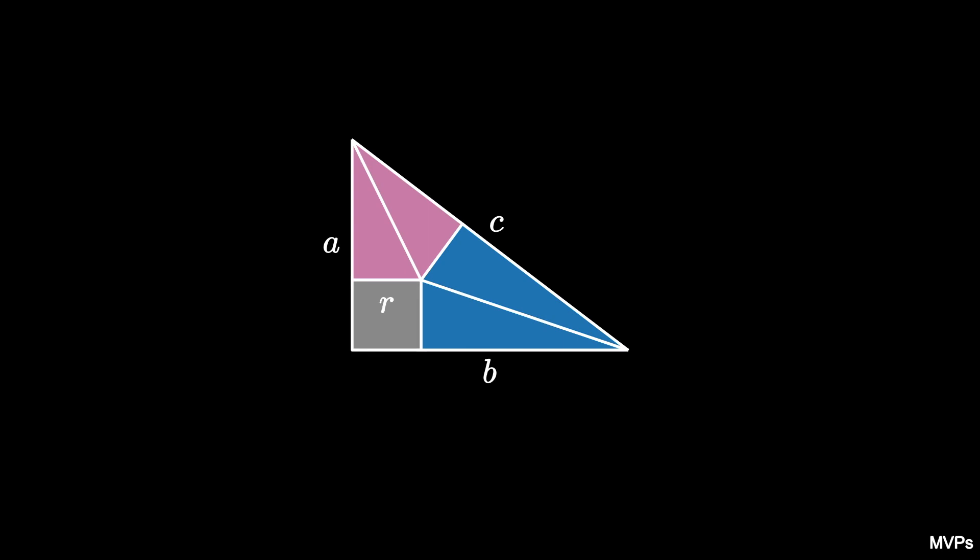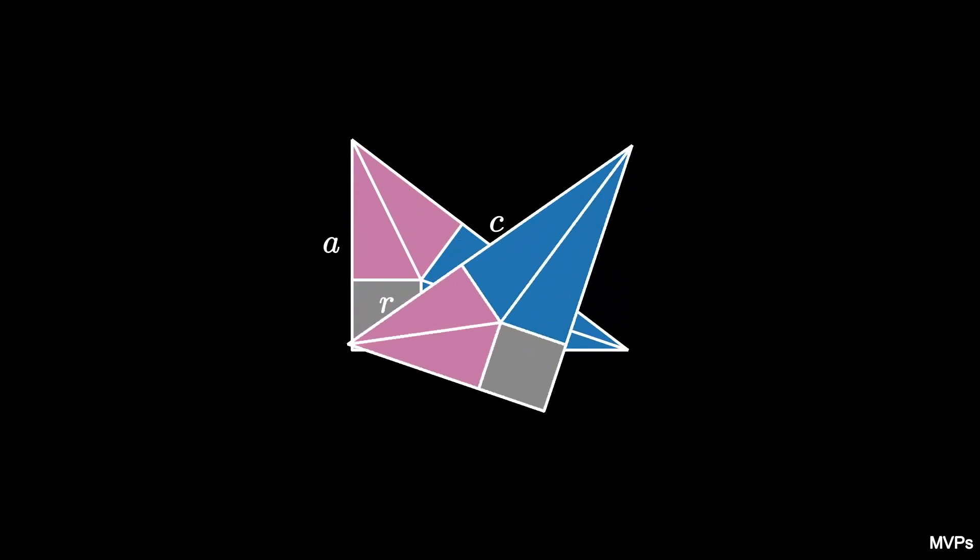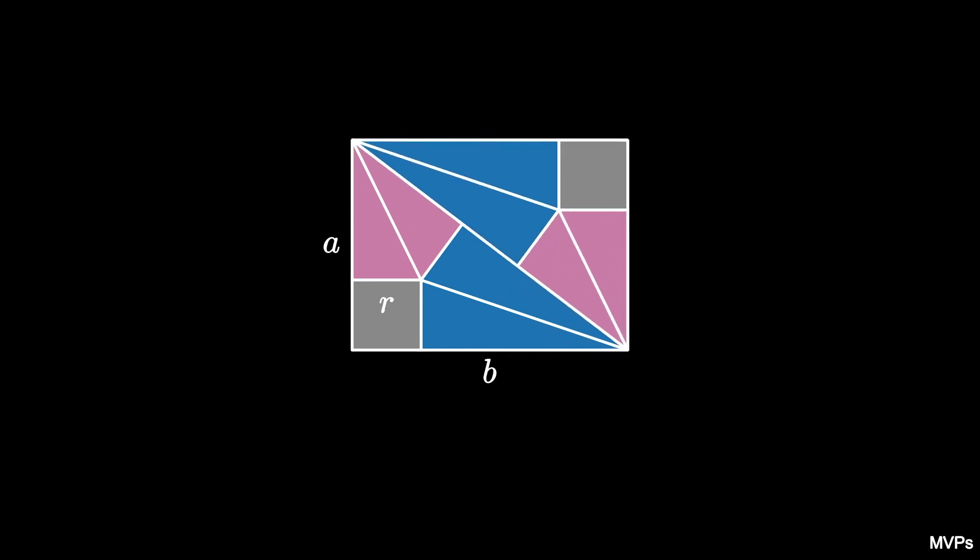If we glue a second rotated copy of this triangle to the original along the hypotenuse, we end up with a rectangle decomposed into eight triangles and two squares.